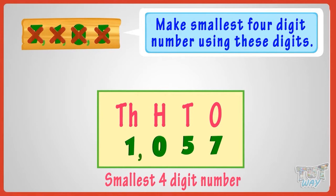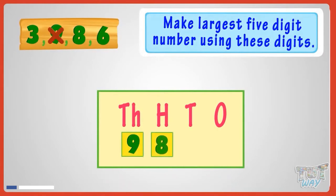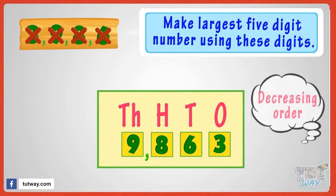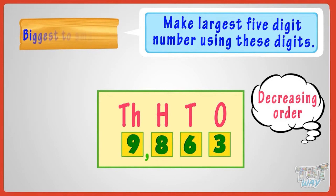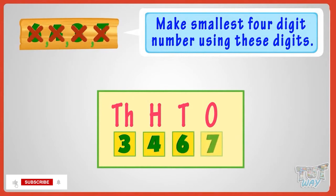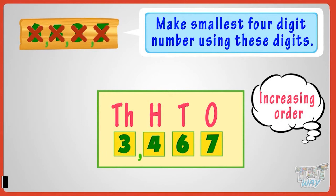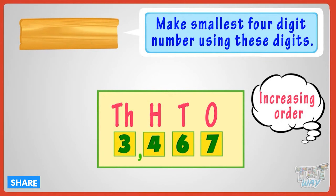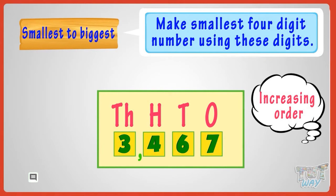So kids, what have we learned? To make the biggest number, arrange the numbers in decreasing order — that is, from biggest to smallest. And to make the smallest number, arrange the numbers in increasing order — that is, from smallest to biggest.